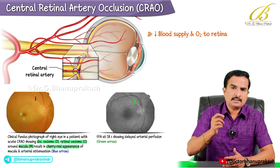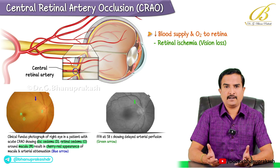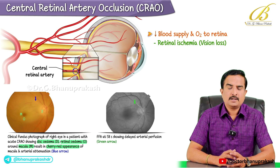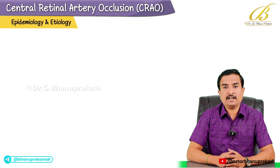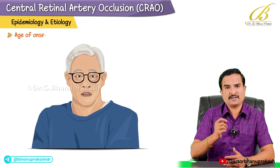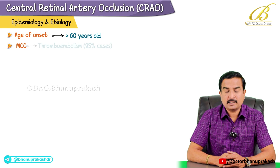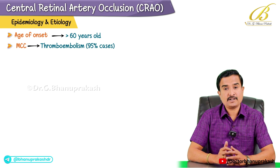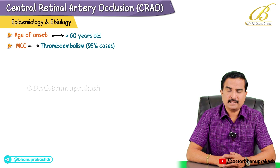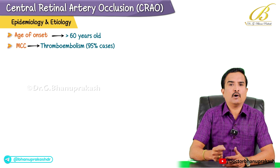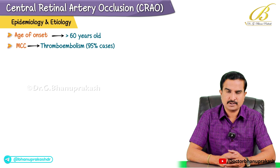This condition causes retinal ischemia which can result in significant vision loss. Central retinal artery occlusion typically occurs in individuals over the age of 60, and the most common cause is thromboembolism, which accounts for about 95% of cases. These thromboembolisms often originate from carotid artery atherosclerosis.